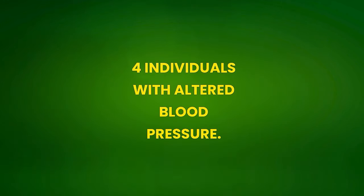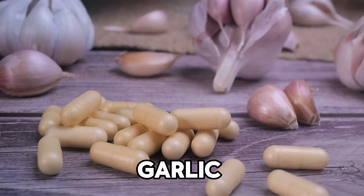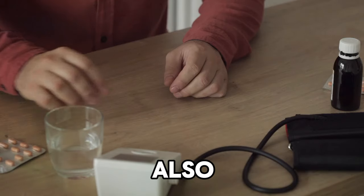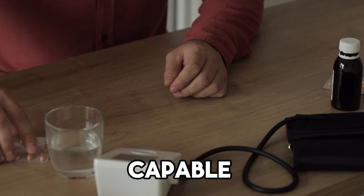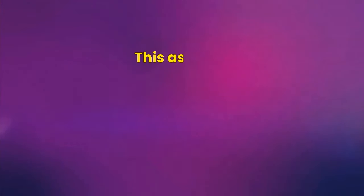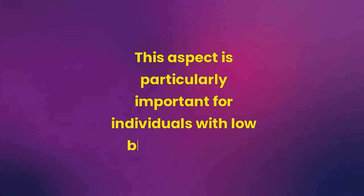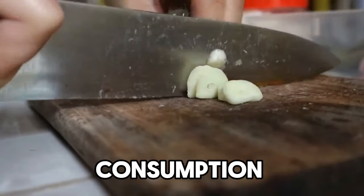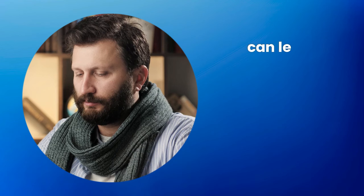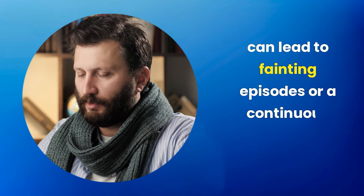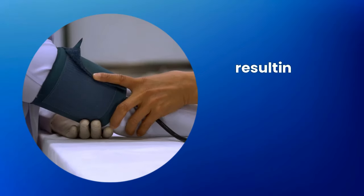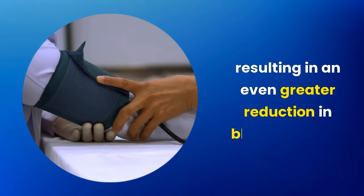4. Individuals with altered blood pressure. Garlic, known for its health benefits, also has a hypotensive effect, capable of lowering blood pressure. This aspect is particularly important for individuals with low blood pressure. Excessive consumption of garlic by these people can lead to fainting episodes or a continuous feeling of weakness, resulting in an even greater reduction in blood pressure.